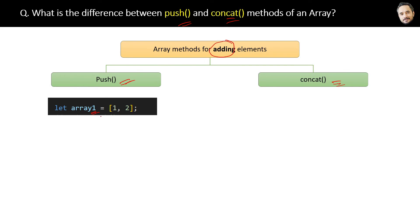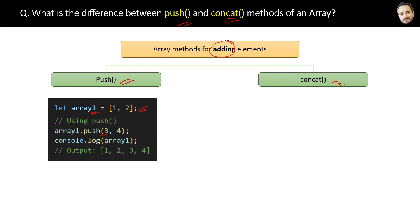Suppose we have this small array. Now if you want to add more elements to this array, we can use the push method. And finally, new elements will be added at the end of the original array like this. So the point is, push methods will modify the original array itself.